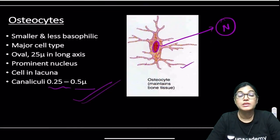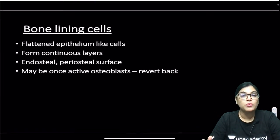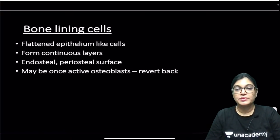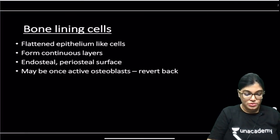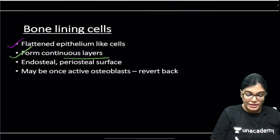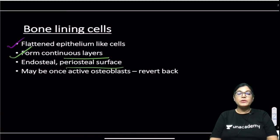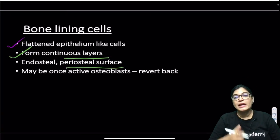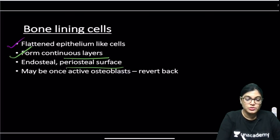Bone lining cells are flattened cells forming a continuous layer that resides over the endosteum and periosteum. An important property is that they can revert — if needed, they can form osteoblasts and then revert back to bone lining cells.